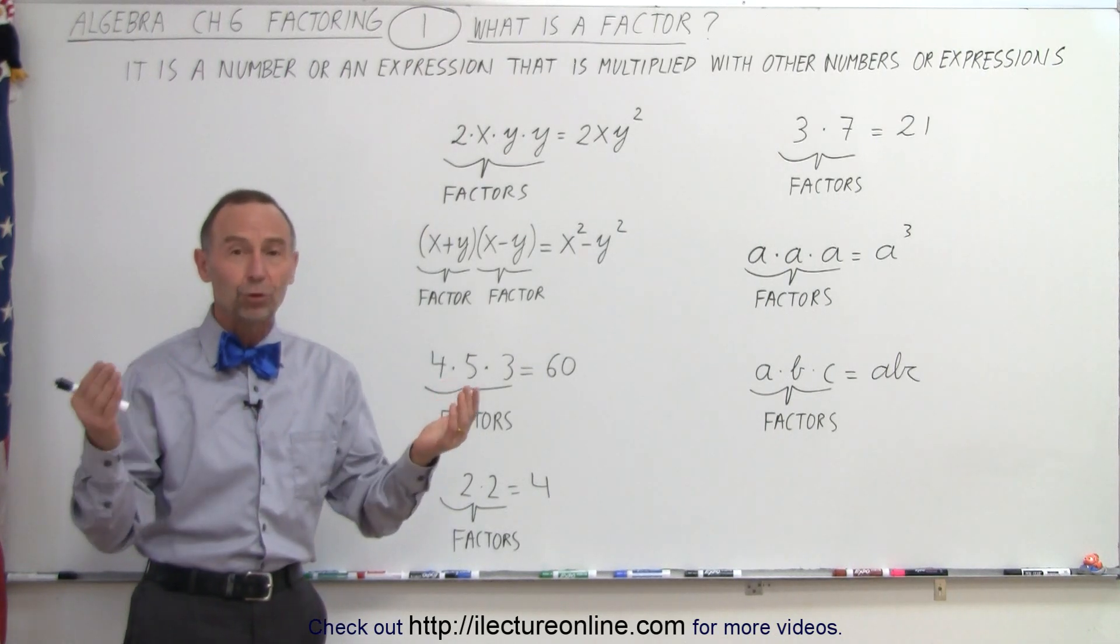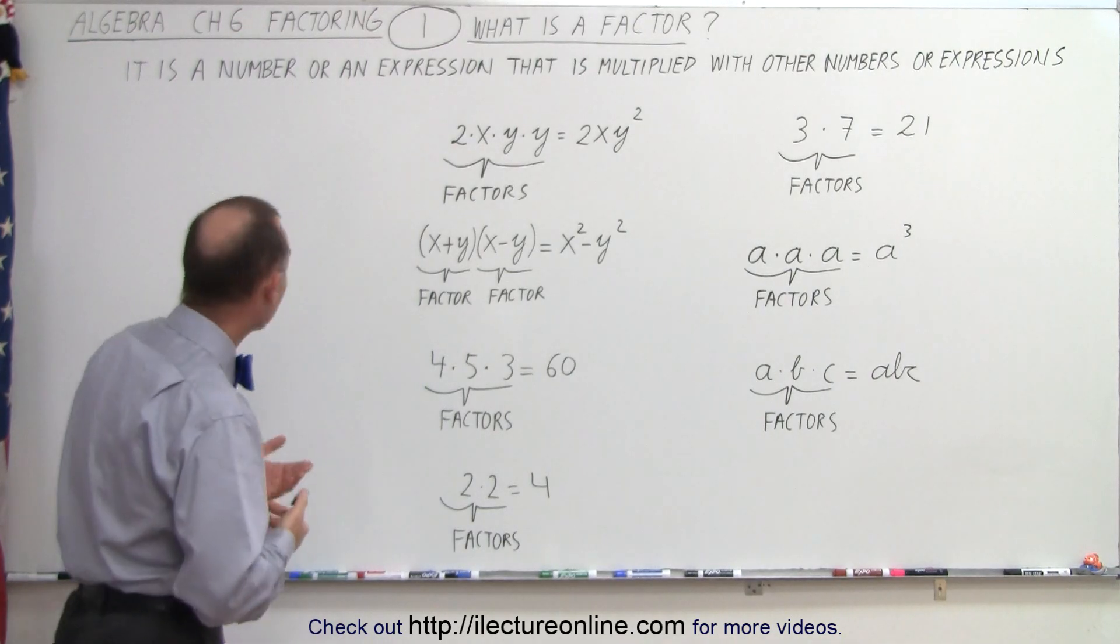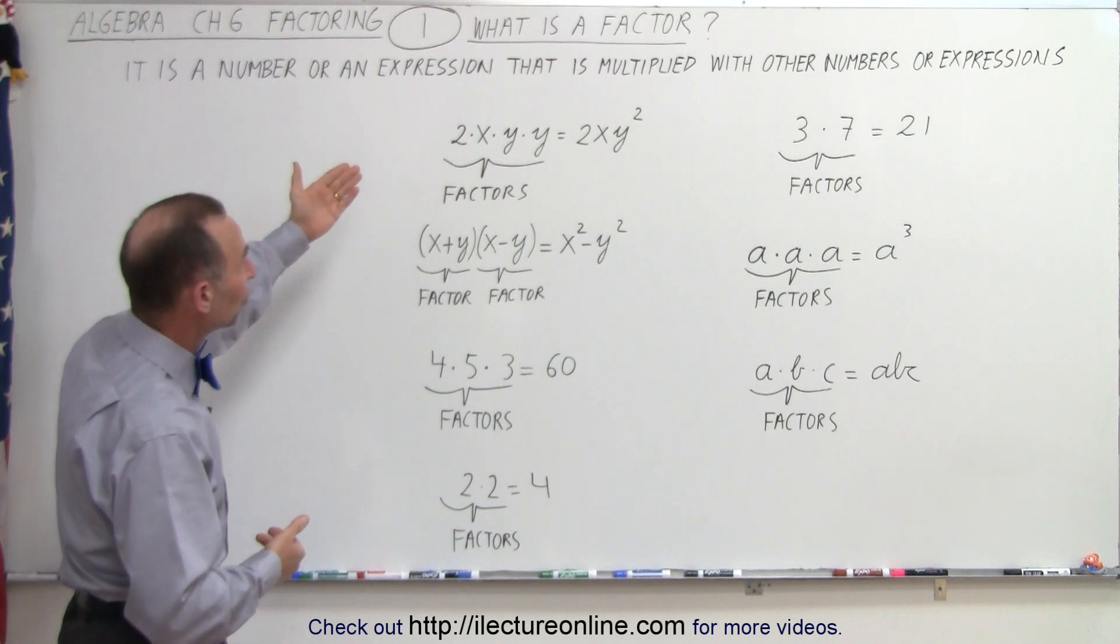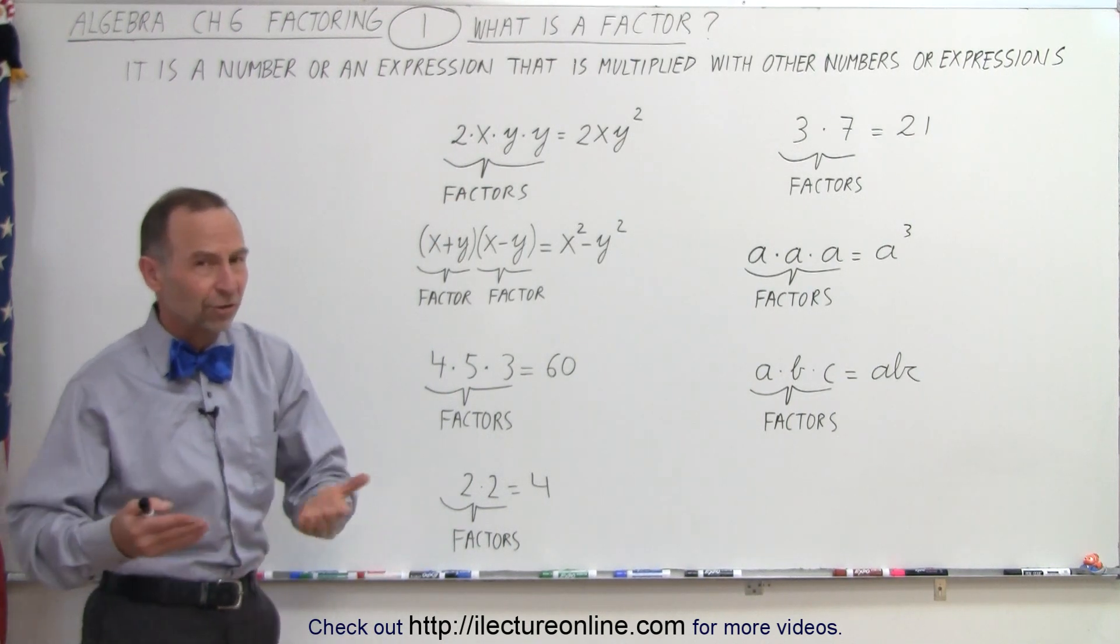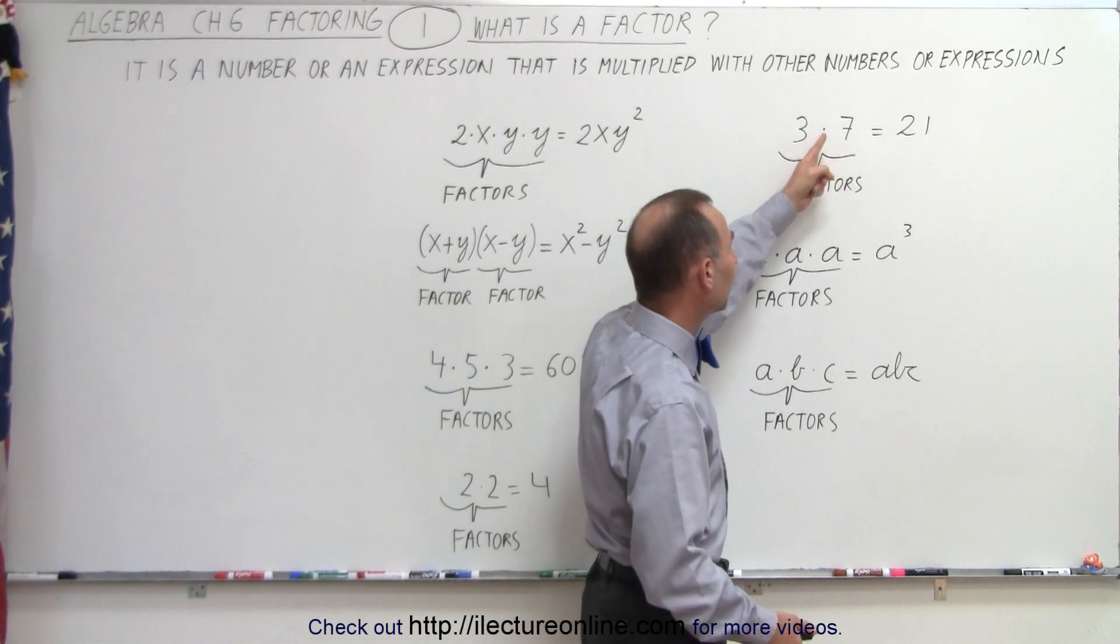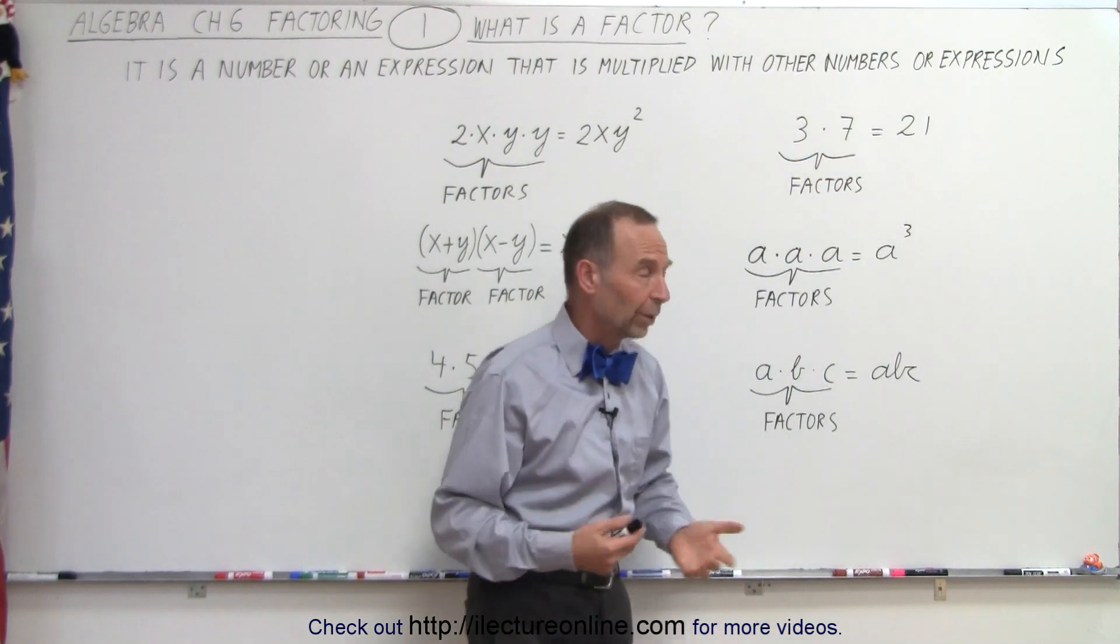Well, whenever you're multiplying two numbers together, those numbers are considered factors. So we can say that a factor is a number or an expression that is multiplied with other numbers or expressions. Here are some examples. For example, the numbers 3 and 7, if they're multiplied together, these then become factors. The result of that multiplication is 21.